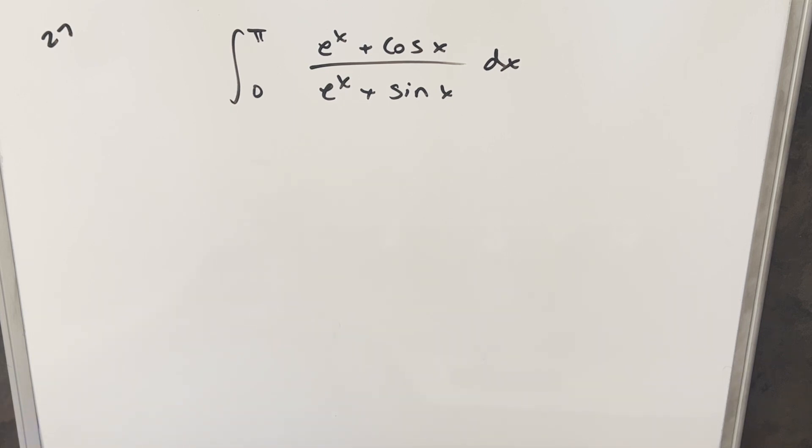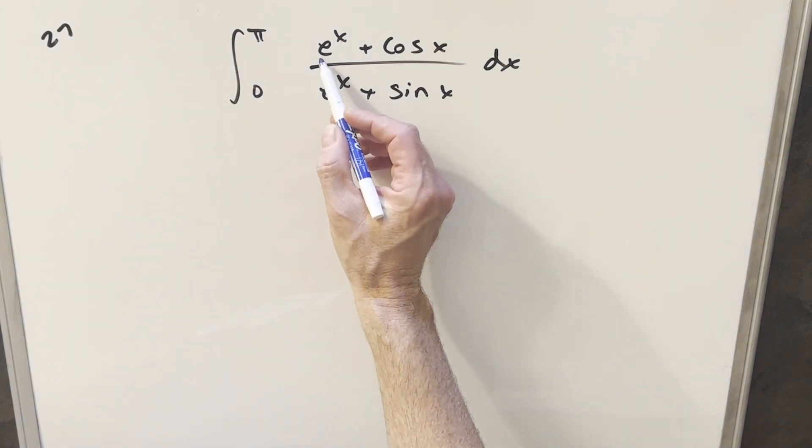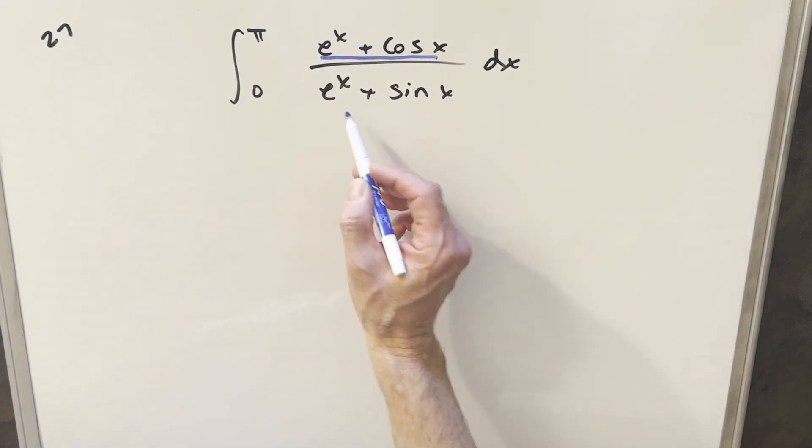Let's get started with this. Why do I think it's going to go so quick? We actually have in the numerator the derivative of our denominator, e^x + sin x. So we're perfectly set up for an easy u-substitution.